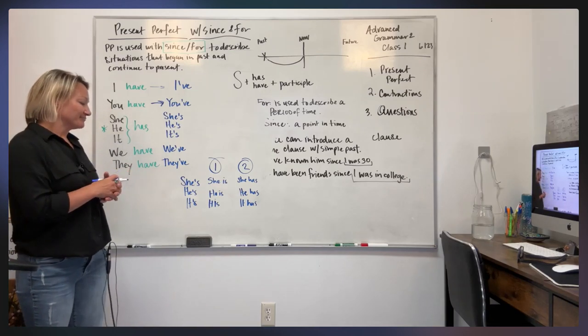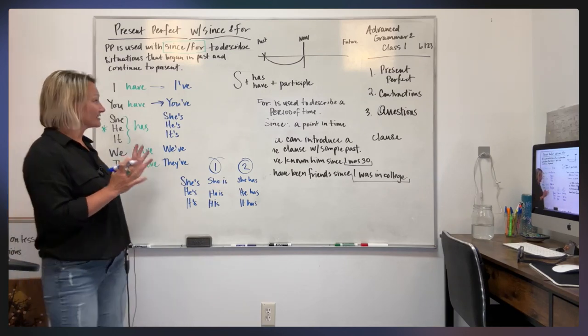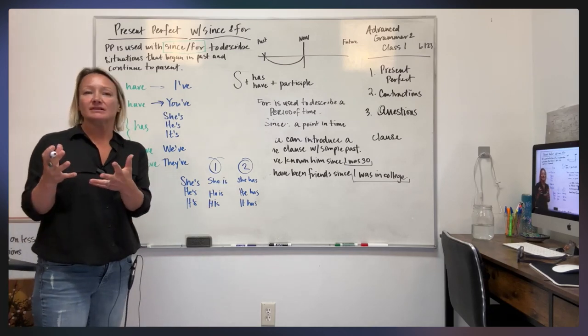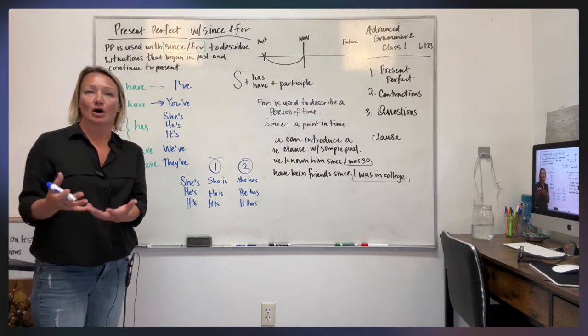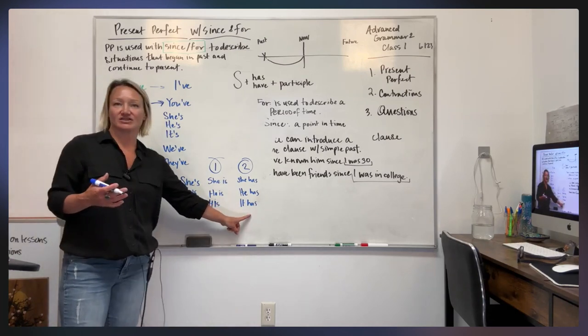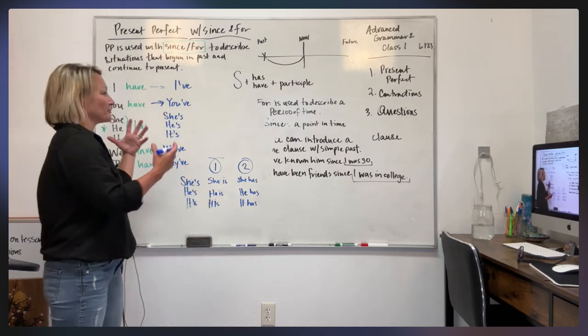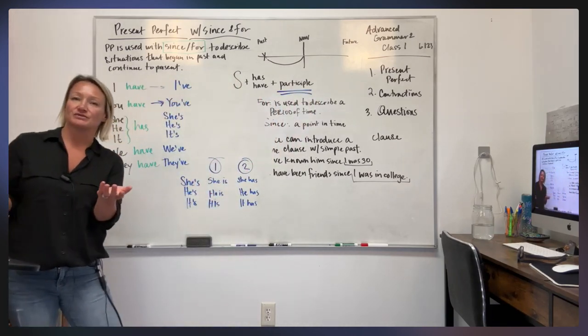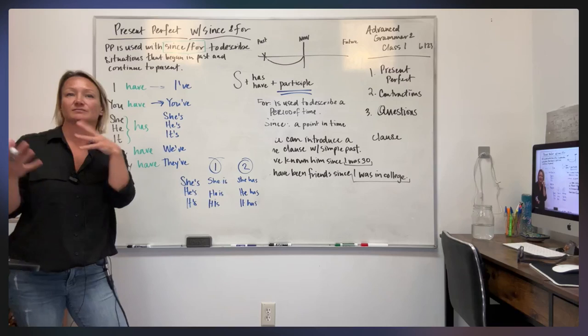But you guys probably already know that. And then, yes. So contractions can be tricky. And the reason, the way that you're going to know if you're referring to she is, he is, or he has, she has, is by having this part here. If there's a participle, then you're using the present perfect.